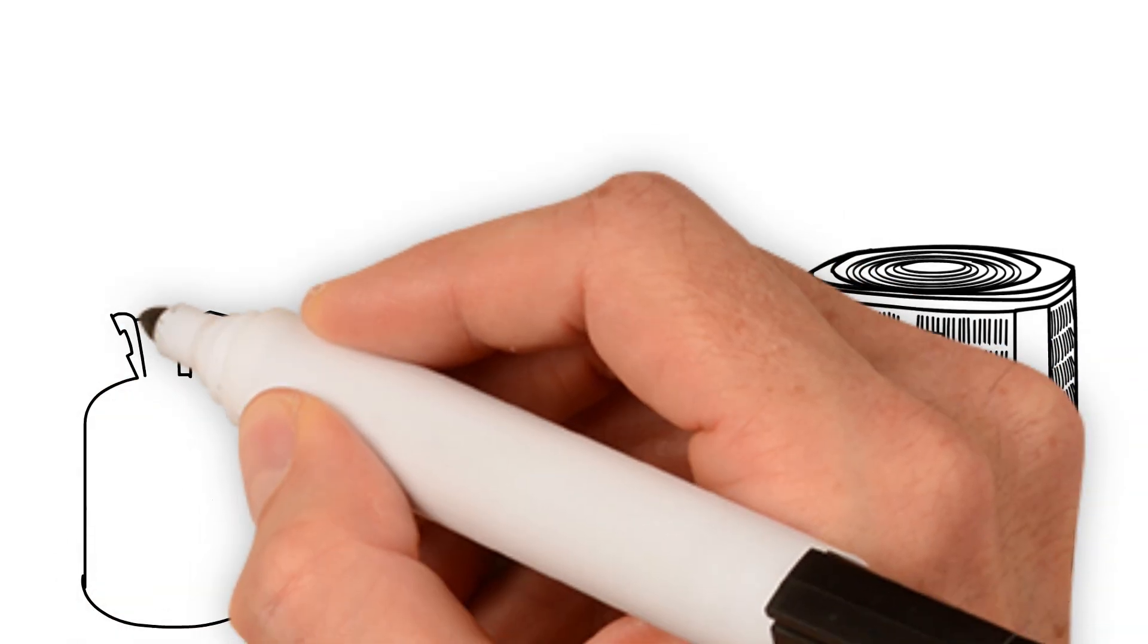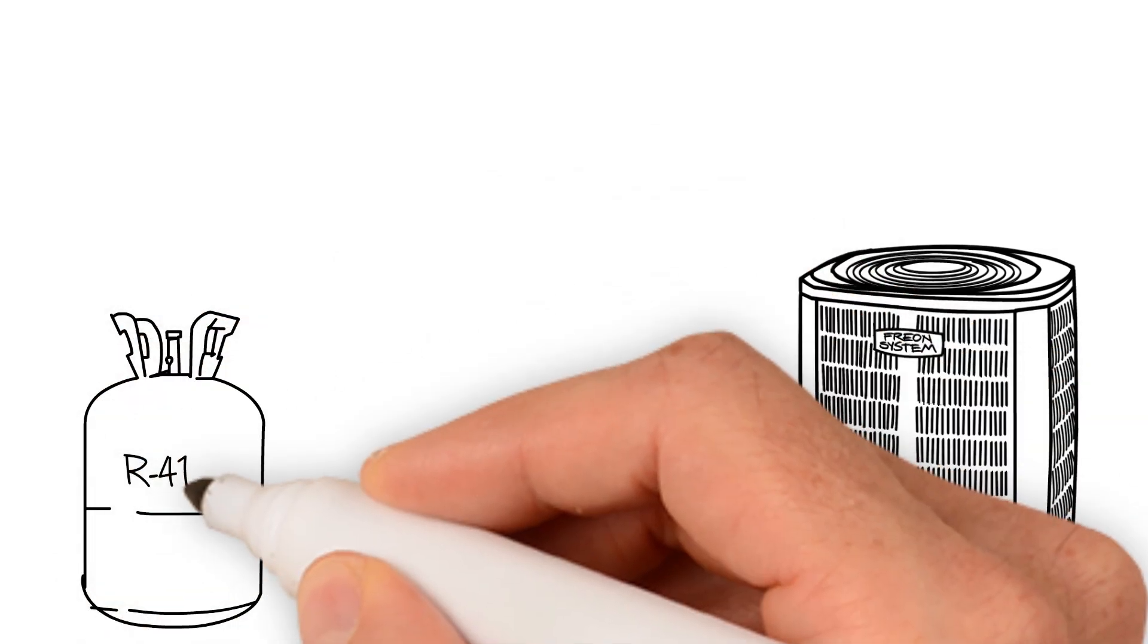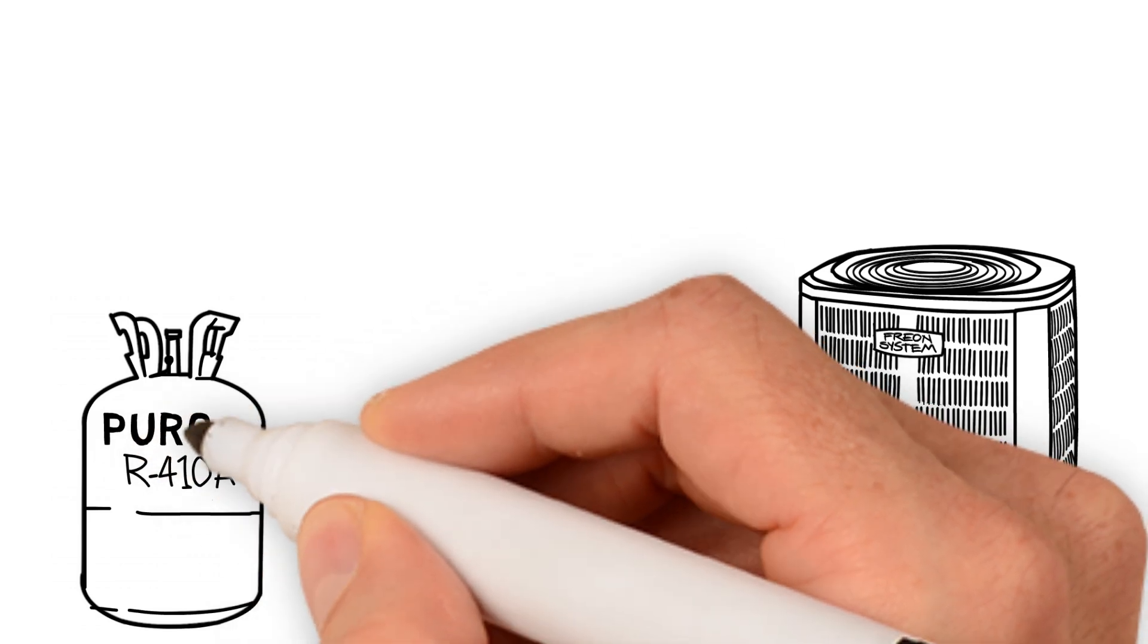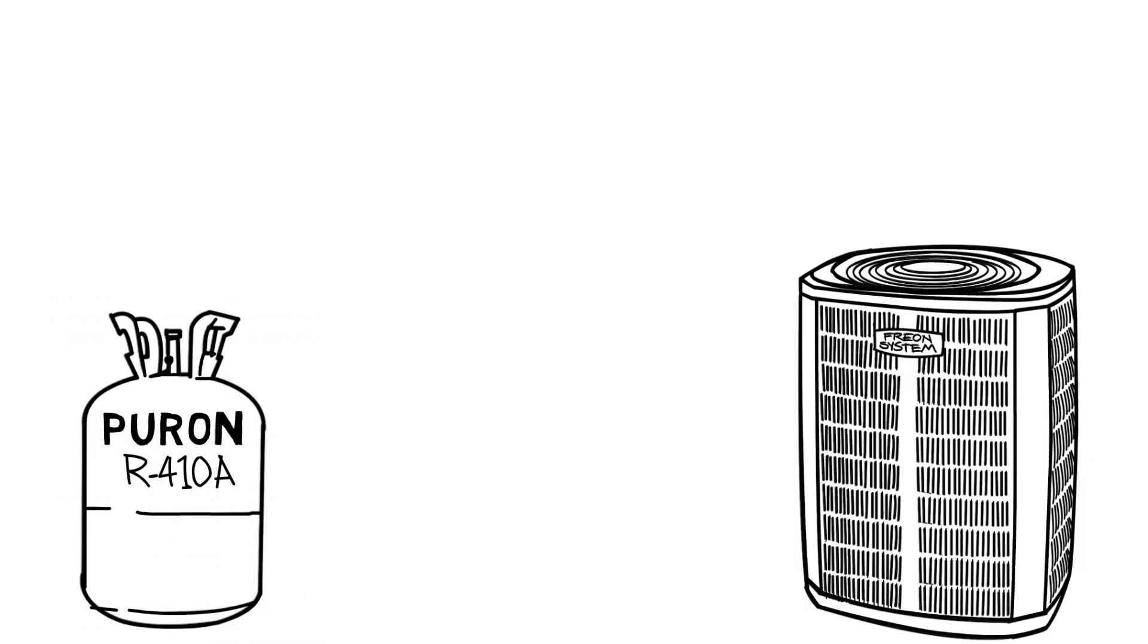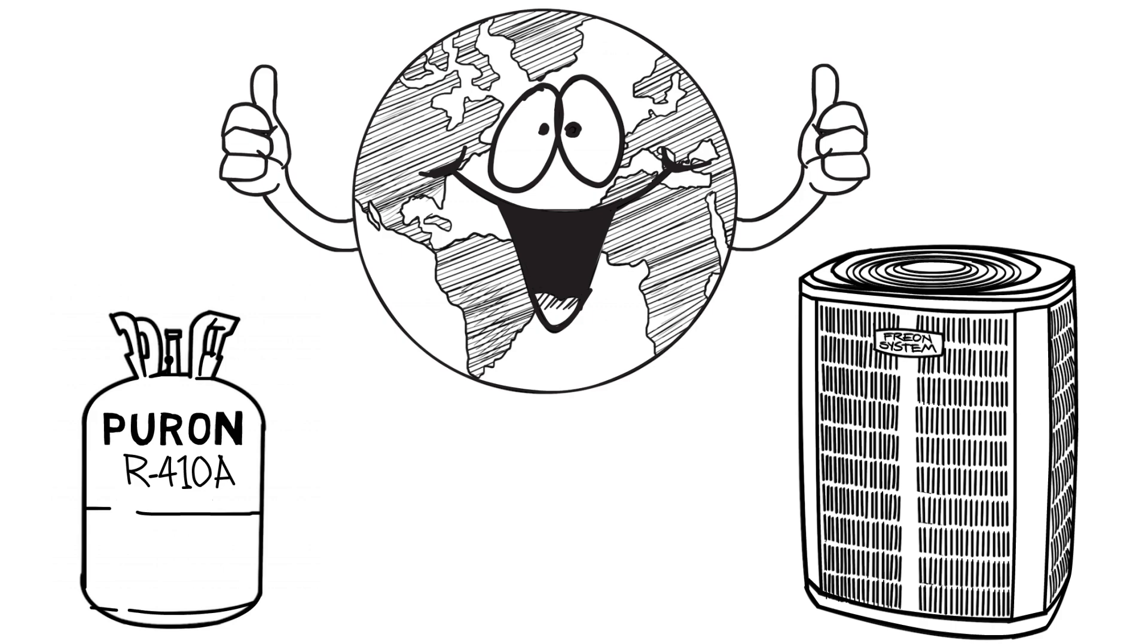What's taking place of Freon? Going forward, all new air conditioners will use a refrigerant called Puron, also known as R410A, which is deemed safer for the environment and more energy efficient.